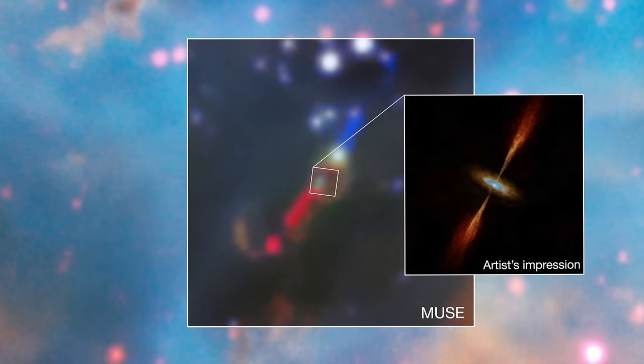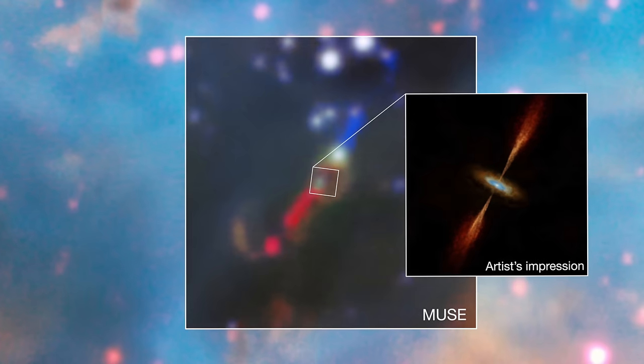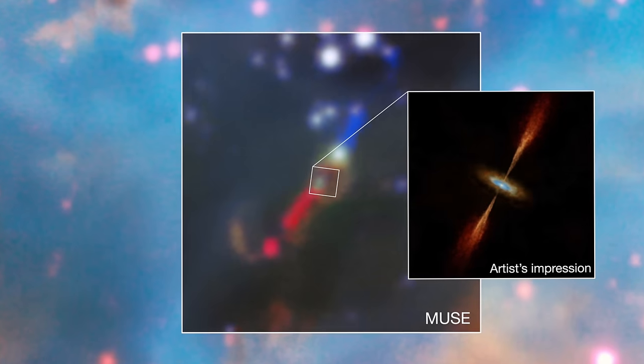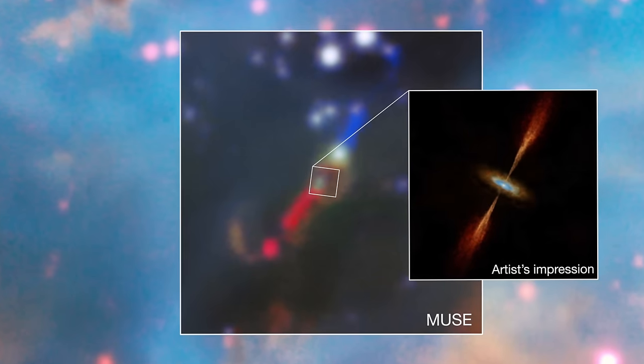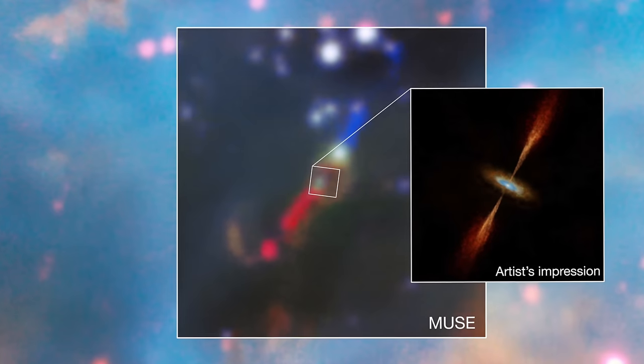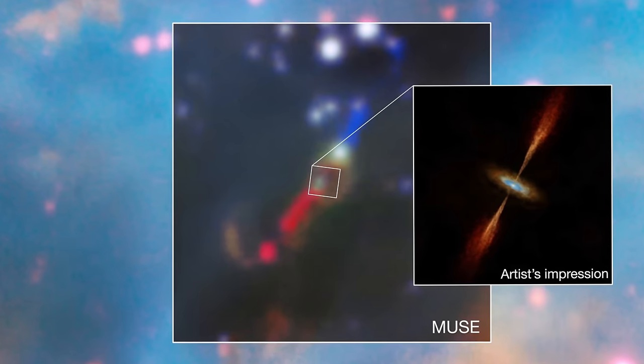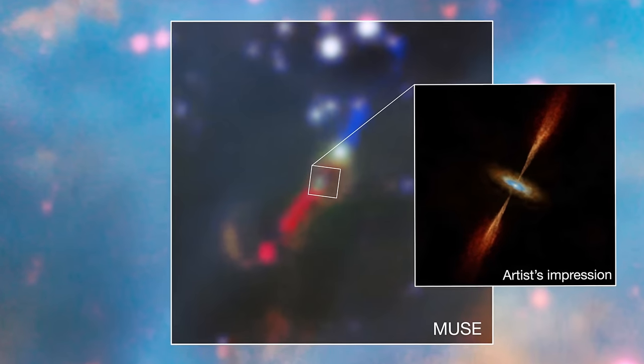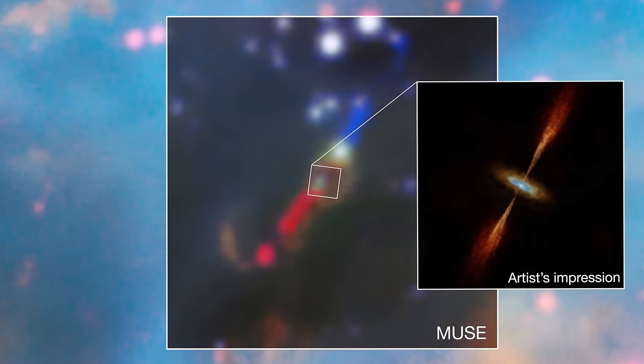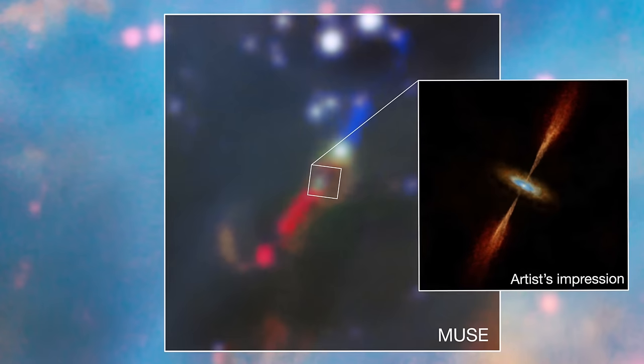So ALMA stands for Atacama Large Millimeter Array, and it's literally an array of radio dishes in the Atacama Desert in Chile. These radio dishes can be combined, over 60 of them can be combined together. They all stare at the same source at the same time, and this really increases our power to look far into the distance in the universe. And the full array has been operational only for a couple of years, and really, it's thanks to our technological advancement that this was possible.